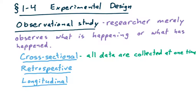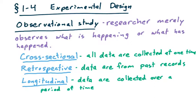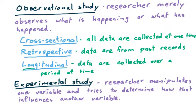When all of the data are collected at one single time, we refer to this as a cross-sectional study. A retrospective study is one in which all the data are from past records, so we're looking back at what happened. And a longitudinal study is one in which data are collected over a long period of time.